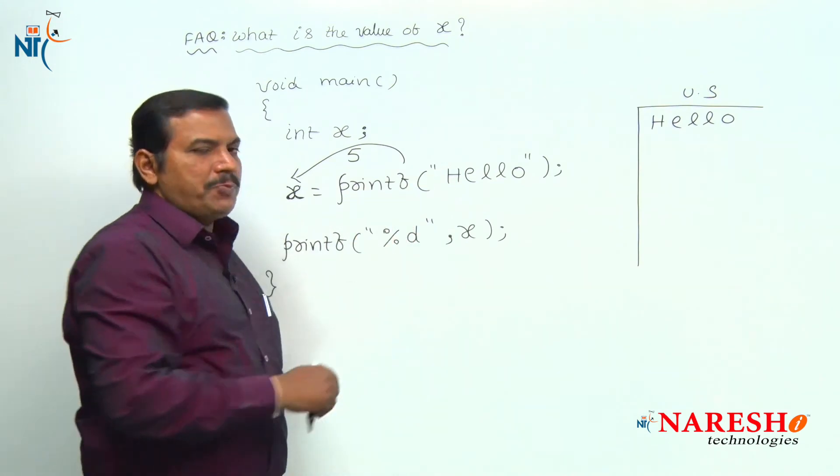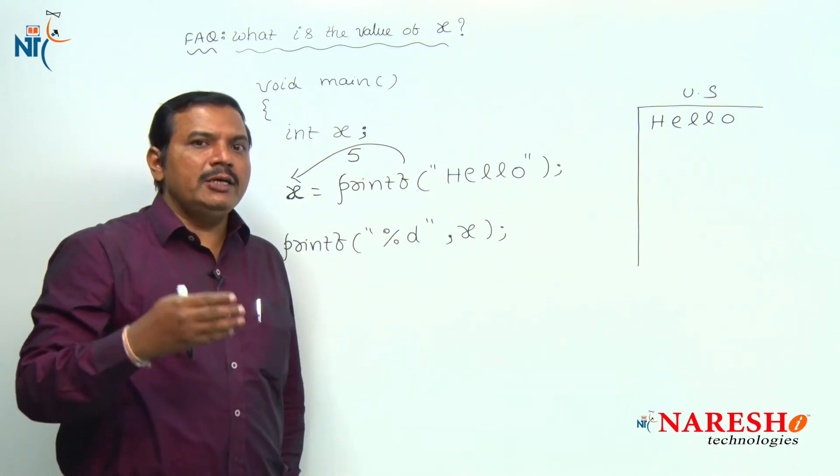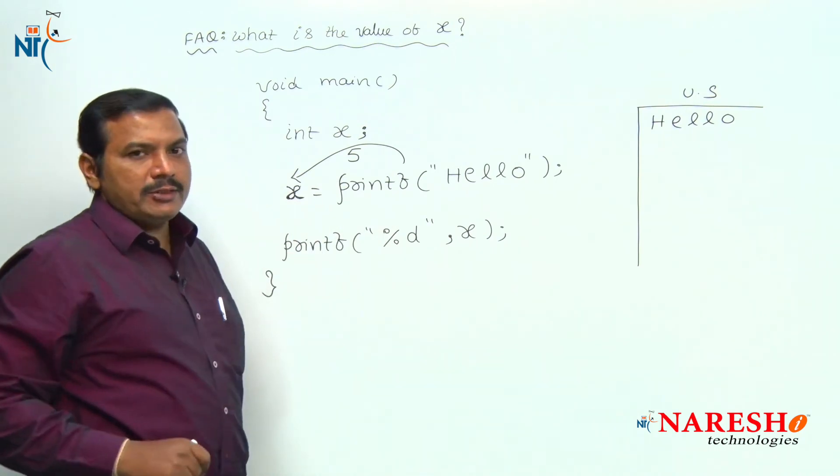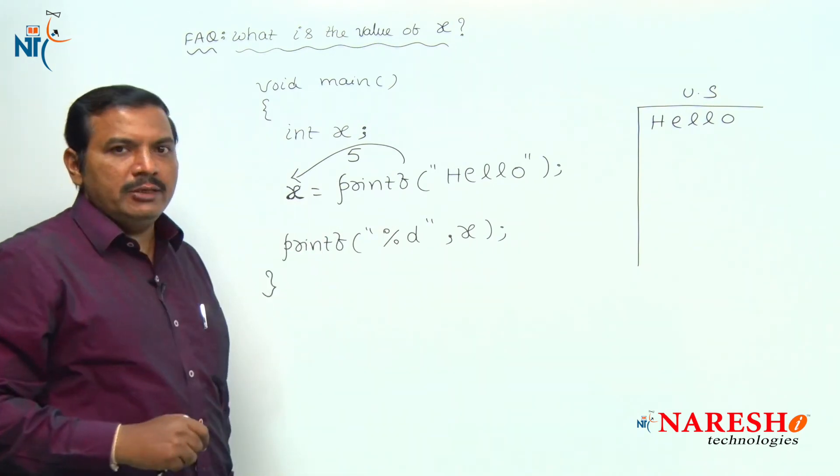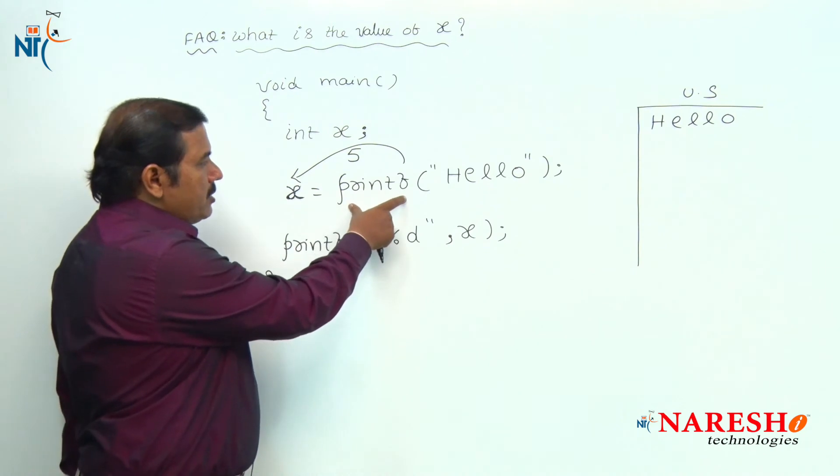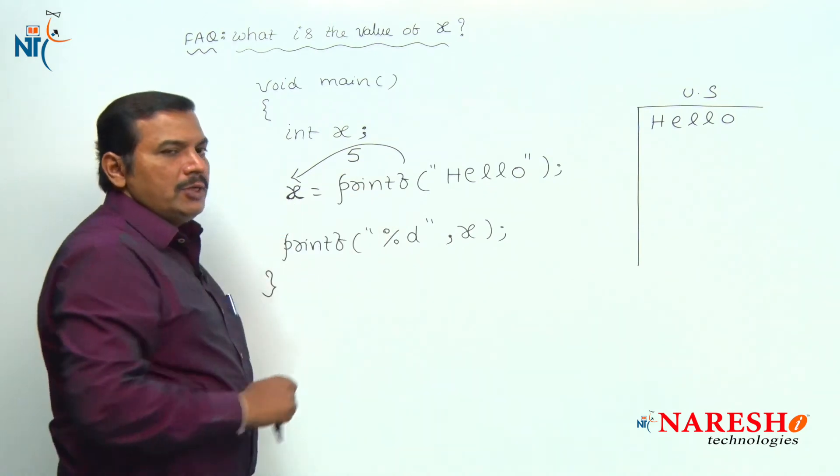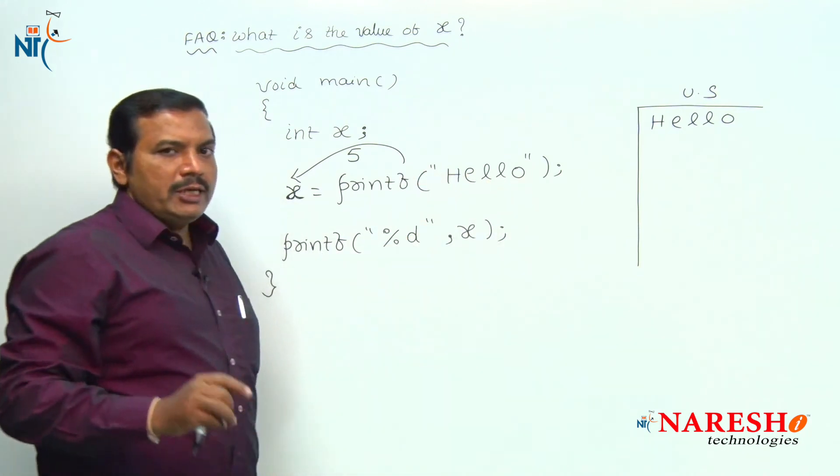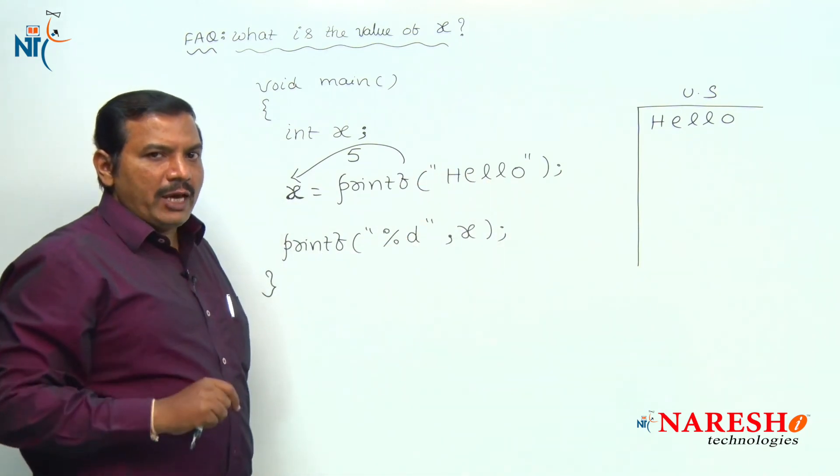Suppose a printf function is printing a string which is having 10 characters, the printf function returns 10 into x. But in this particular question, the printf function returns an integer value 5 into variable x because the string hello is having five number of characters.